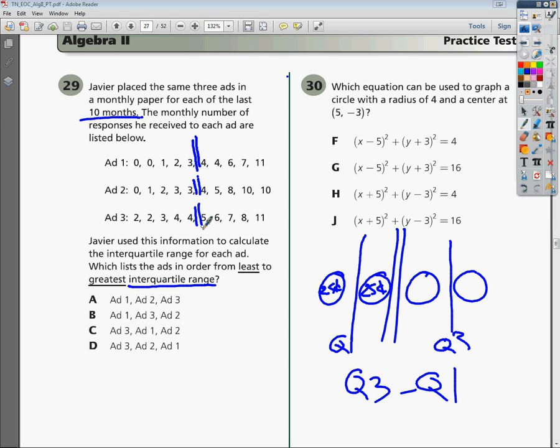Now I need to find where the quarter is, the halfway point of each part I've broken in half. From zero to three, the middle number is one. From four to eleven, the middle number is six. For ad two, it's two and eight. These are my quarters.